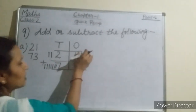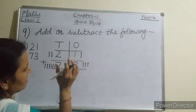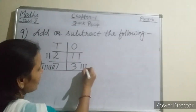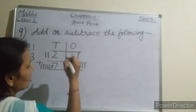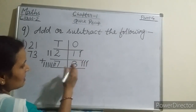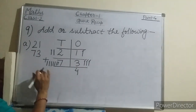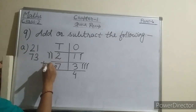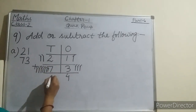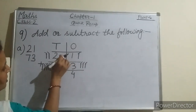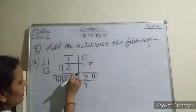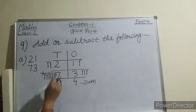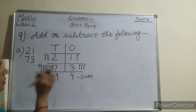We have to count these matchsticks and we will start from the ones place side. Start counting — 1, 2, 3, 4. So how many matchsticks at the ones place? 4. So here we will write 4. And again come to the tens place. Start counting — 1, 2, 3, 4, 5, 6, 7, 8, 9. So here we will write 9. For 2 tens and 1 ones plus 7 tens and 3 ones, what is the sum? 9 tens and 4 ones. So 21 plus 73 is equal to 94.